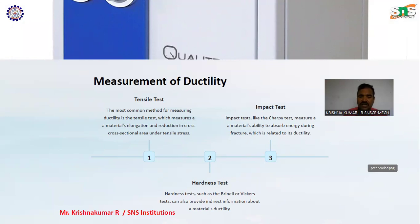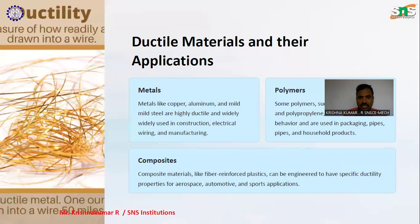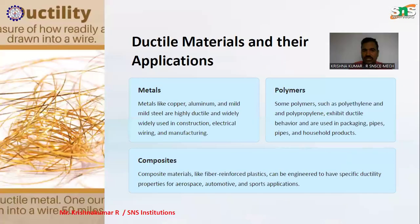Hardness test: hardness tests such as the Brinell or Vickers test can also provide indirect information about a material's ductility.